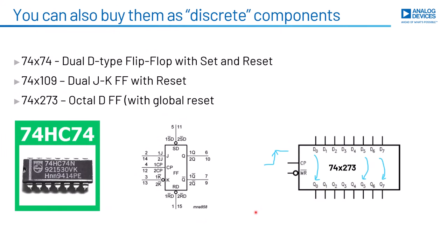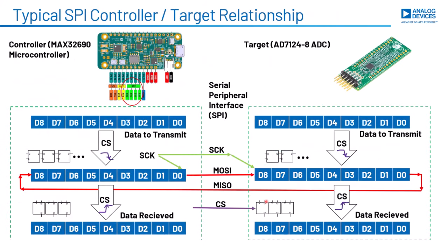You can also buy flip-flops as discrete components. The 7474 is what we'll be looking at — the X indicates there are different families with different characteristics: TTL, CMOS, low-voltage CMOS, etc. The 7474 is a dual flip-flop with extra features. The 74273 is an octal-D flip-flop. If you've looked at old computer hardware from the late 70s and early 80s, you'll often see fields of 273 latches. You present an 8-bit byte of data on 8 pins, and at the rising clock edge, the data is copied to the Q output and held.